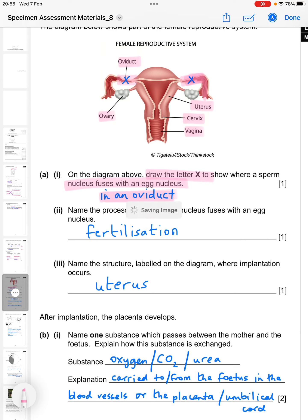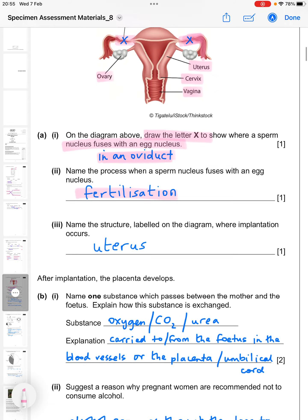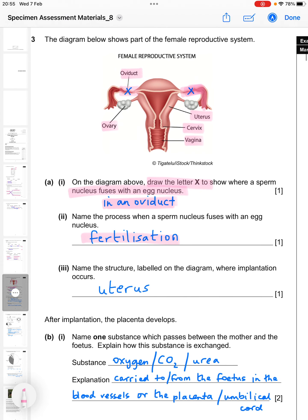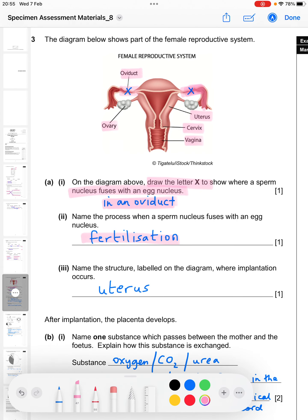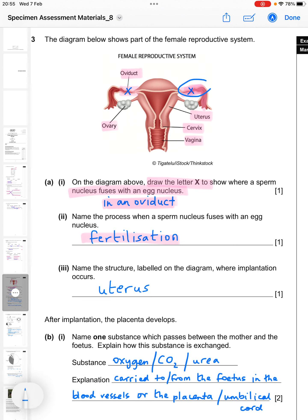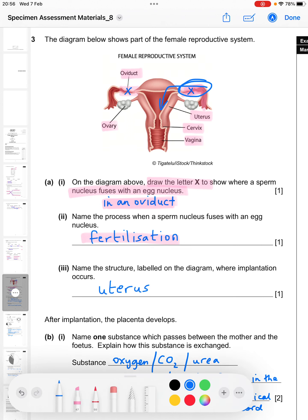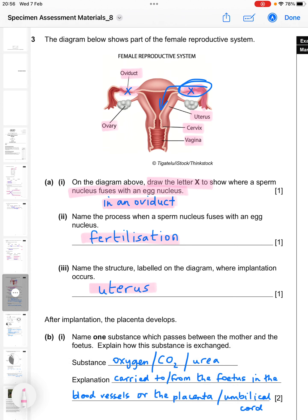Part two. Name the process when a sperm nucleus fuses with an egg nucleus. So that is just one word, fertilization. And then the structure labeled on the diagram where implantation occurs. So after fertilization occurs in one of the oviducts, the fertilized egg travels down into the uterus and it embeds in the lining of the uterus. So that's the answer there.